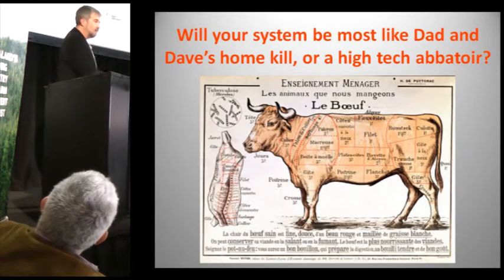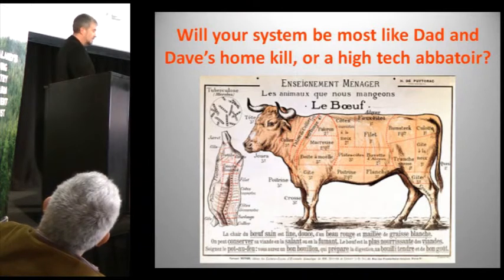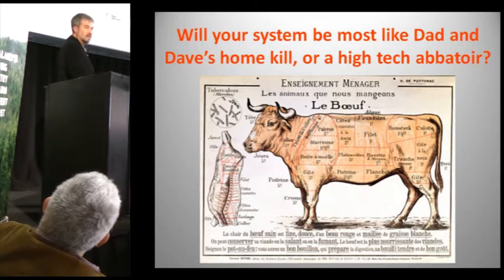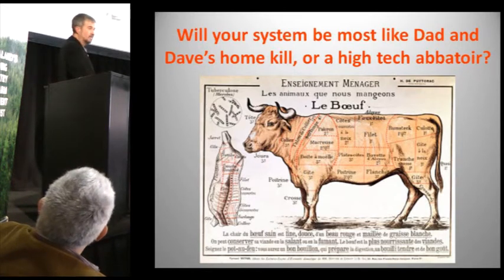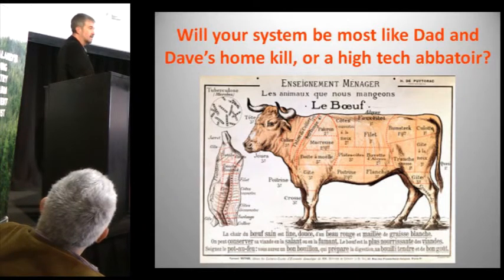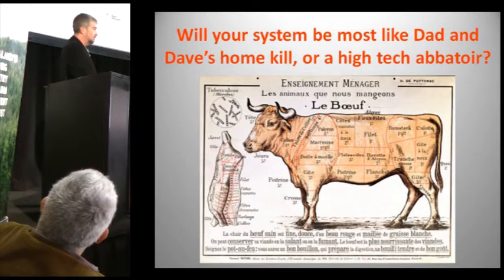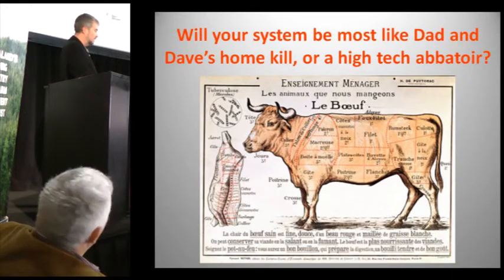Just a question to take home as you're going to get stuck into the harvest process: is your system going to be more like Dad and Dave's home paddock — arriving at the farm with a hive and driving into a big forest? Or are you going to get high-tech and really make sure that you're isolating piece by piece the best value out of your forest and really going to work on that?